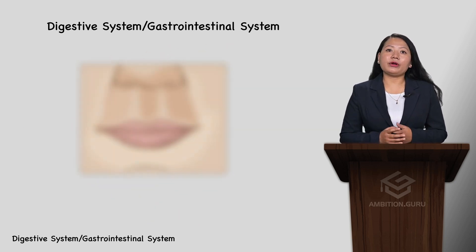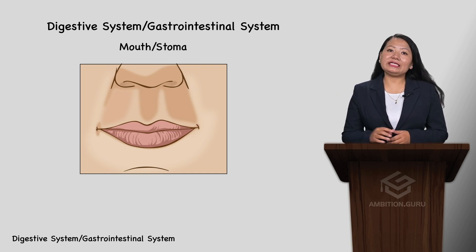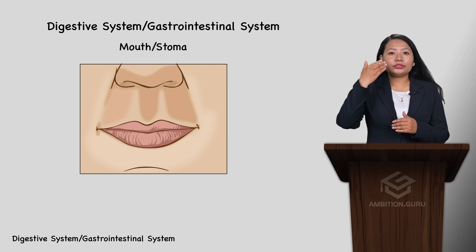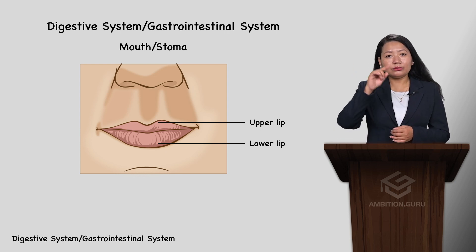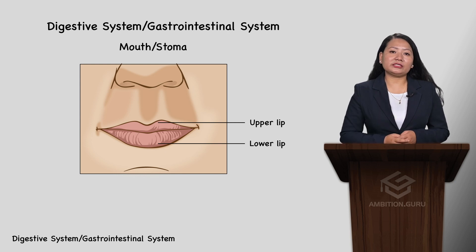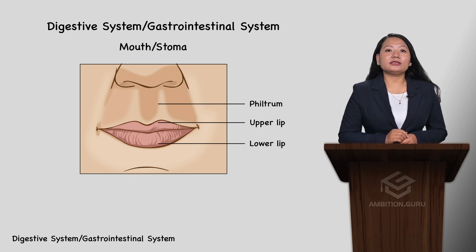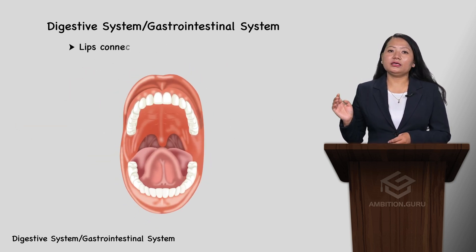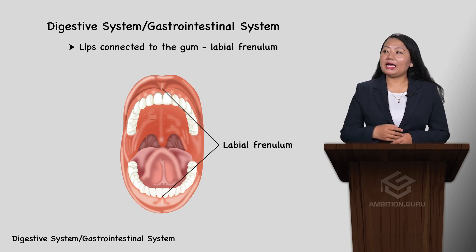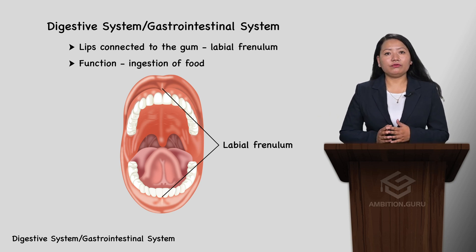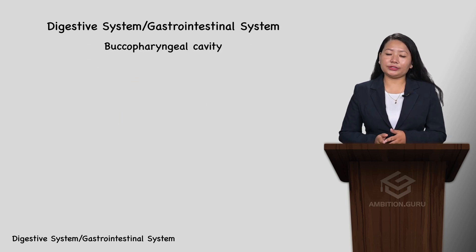The first part is the mouth, also known as stoma. It is a transverse slit-like aperture bounded by the upper lip and lower lip. The upper lip has a small depression or vertical groove called the philtrum. The lips are connected to the gum by a structure called the labial frenulum. The function of the mouth is ingestion of food.